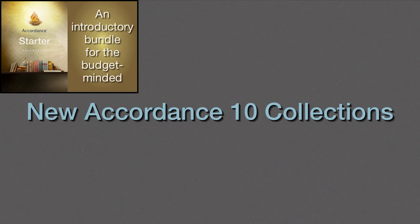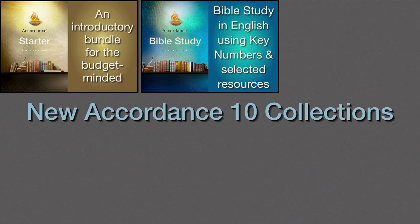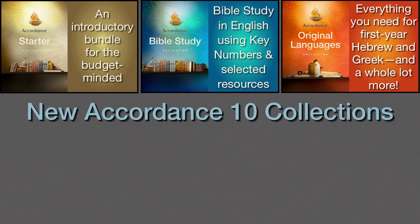Along with Accordance 10, we're introducing six new collections. First up is the Starter Collection, an introductory bundle for the budget-minded. Next is the Bible Study Collection, which allows users to study the Bible in English using key numbers and selected resources. For those with knowledge of Greek and Hebrew, or the desire to learn, we offer the Original Languages Collection — everything anyone needs for first-year Hebrew and Greek, and a whole lot more besides.